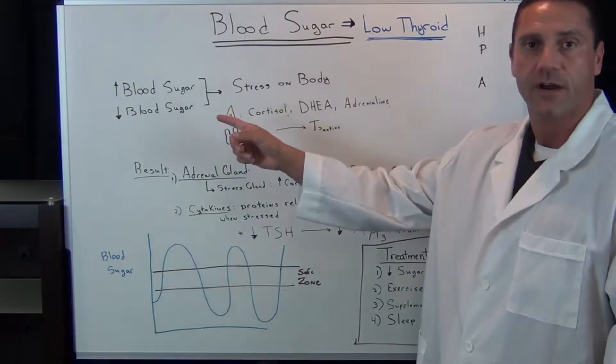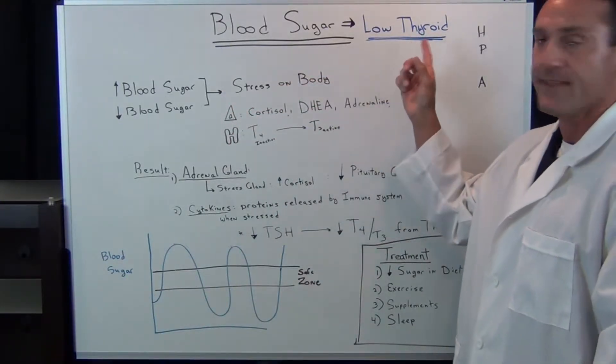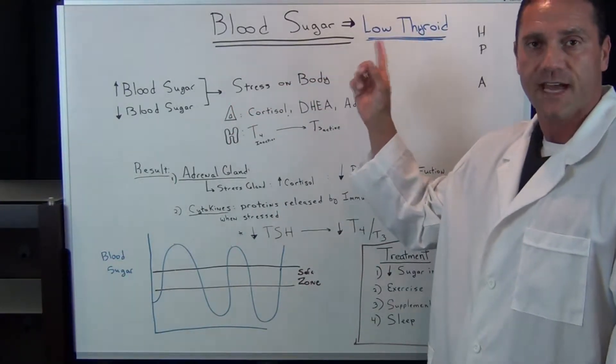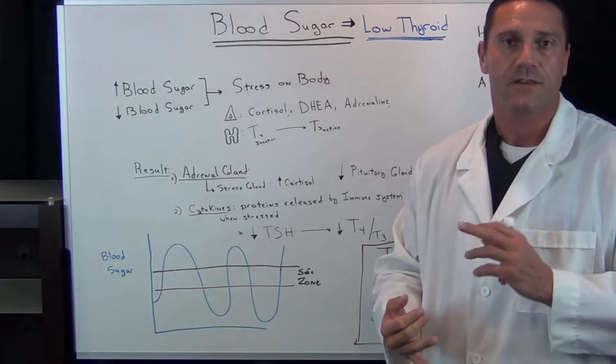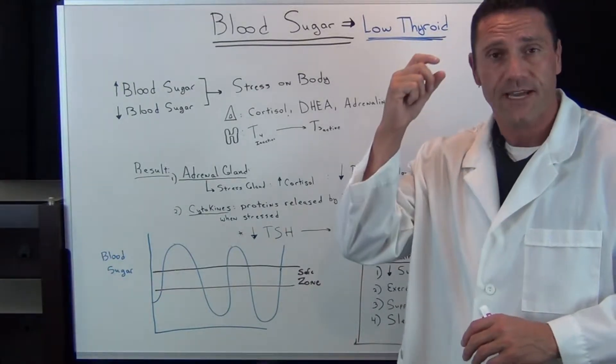In this video, I want to explain how fluctuations of blood sugar and its effect on the thyroid, how it could cause hypothyroid symptoms like slow metabolism, hair loss, especially the outer one-third of the eyebrows.